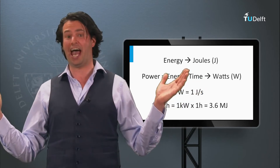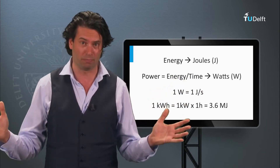Why do we have a problem? The first challenge humankind is facing is a supply-demand problem. The demand is constantly growing. The world population is still rapidly growing, and some studies predict a world population of 9 billion around 2040, in reference to the 7 billion people living on this planet today.